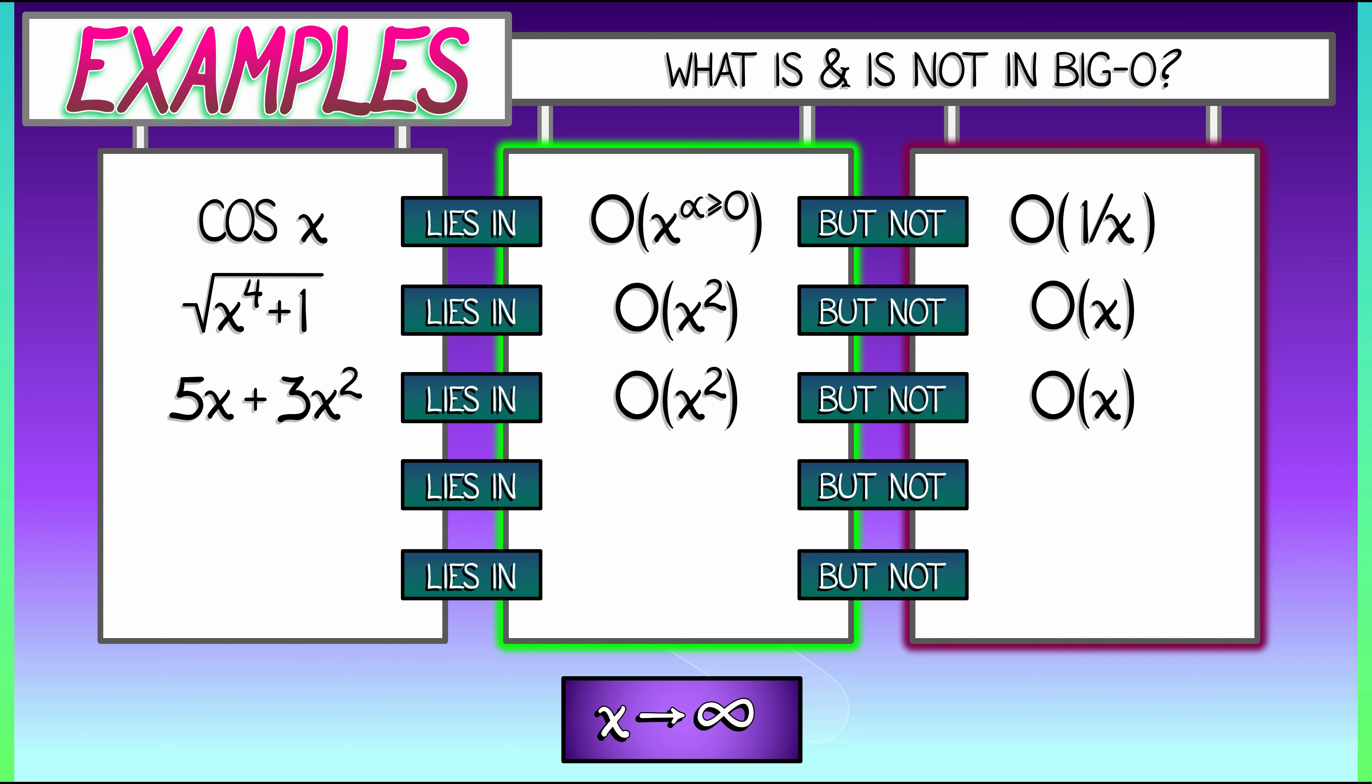Consider the function log of x. We've looked at this guy before. This lies in big O of square root of x. That is, the square root of x, that growth, it dominates logarithmic growth. But, log of x does not lie in big O of 1. That is, there's no constant, no matter how large, that bounds log of x as x is going to infinity.